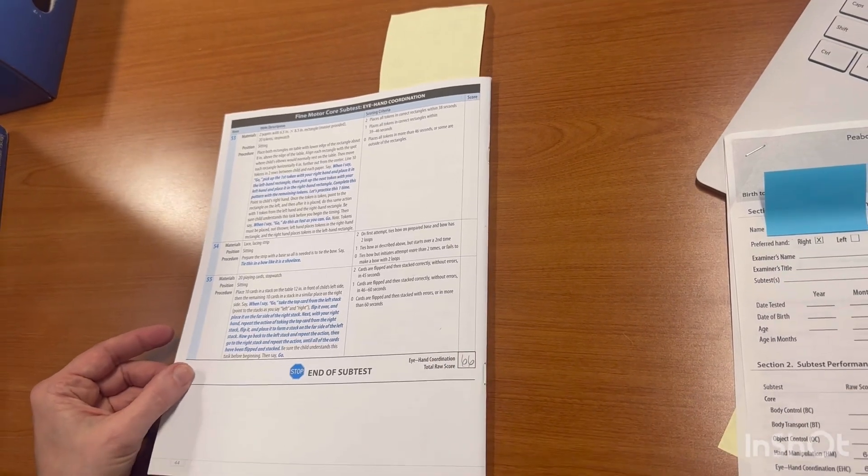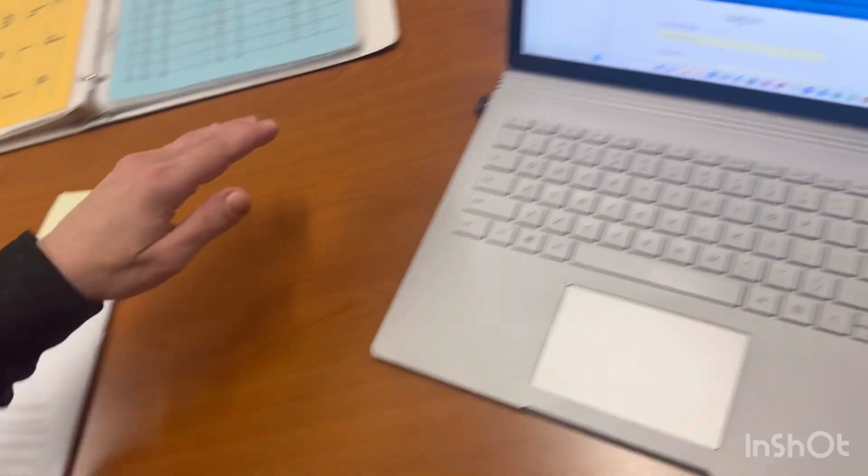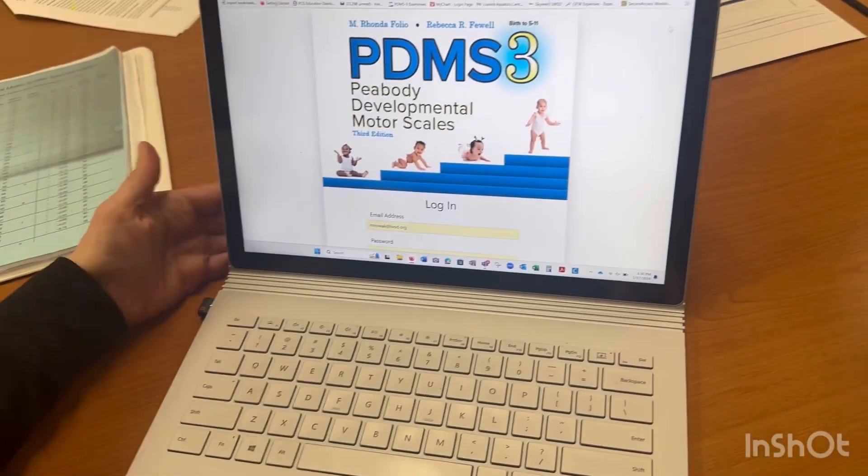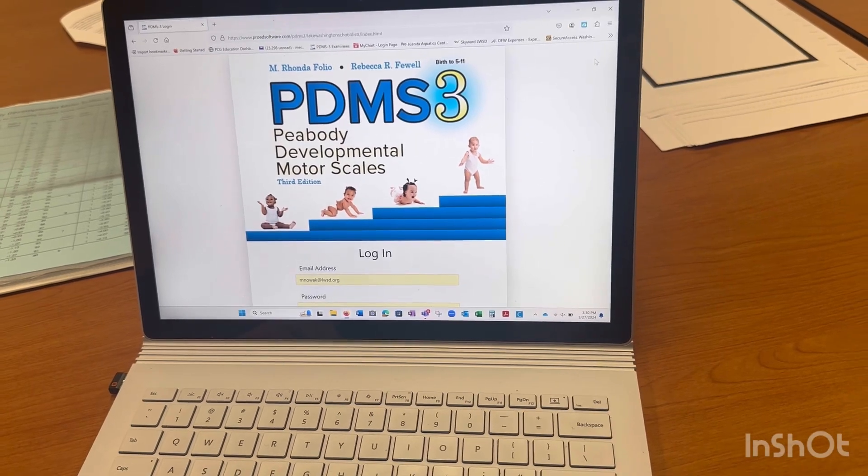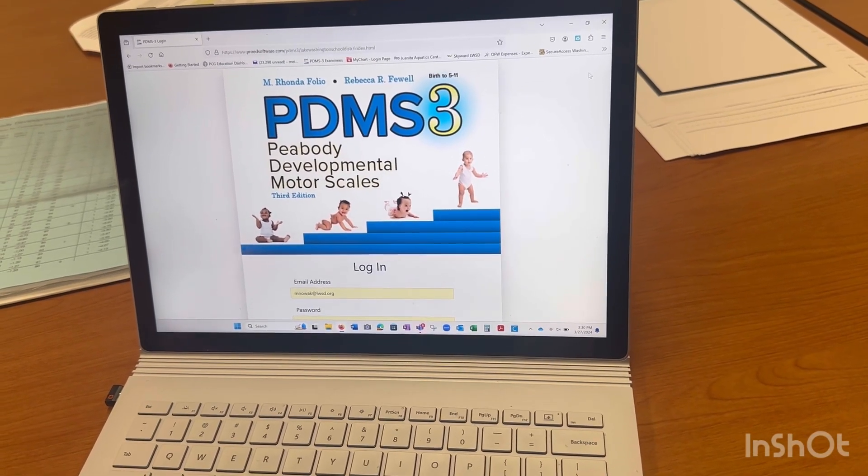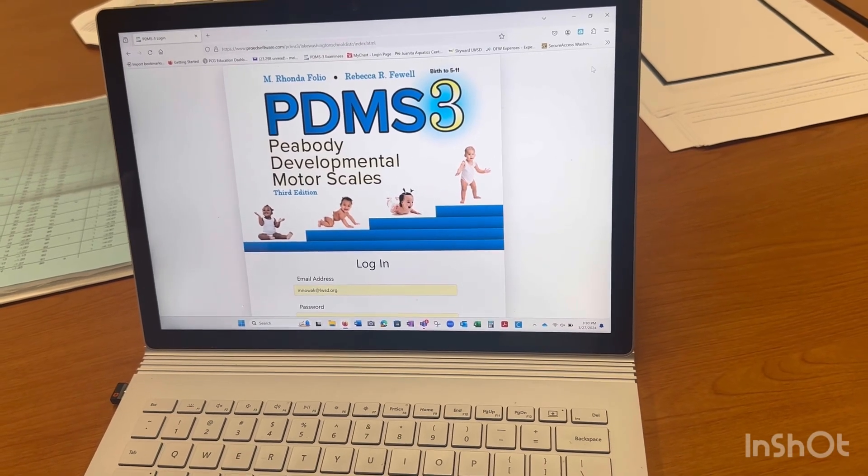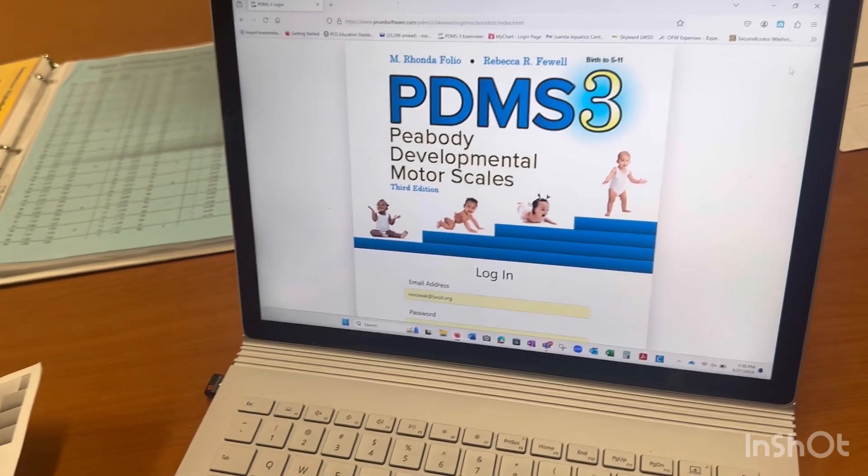So you take 64 and 66 subtests, and we're going to go to the PDMS3 website. You're going to log in and insert the student's name and date of birth and test date, and you're going to put in the raw scores.